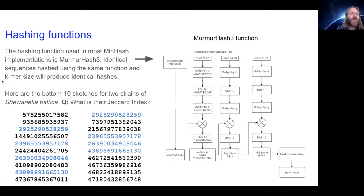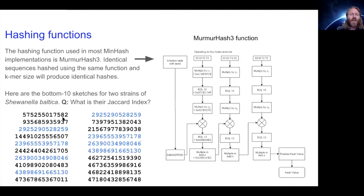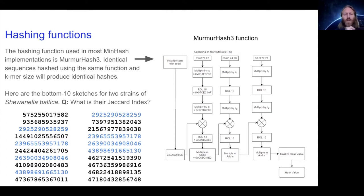If we take two strains of Shewanella baltica and do bottom sketching on both using this hash function, on the left is one strain and on the right is another strain. The identical hash values are in blue and the unique ones for each are in black — this is actual data I just did in SourMash a couple hours ago. To calculate the Jaccard index, we take the intersection — four blue ones — and divide by the number unique to A (six) plus unique to B (six) plus the intersection (four), giving 4/16 or 0.25.